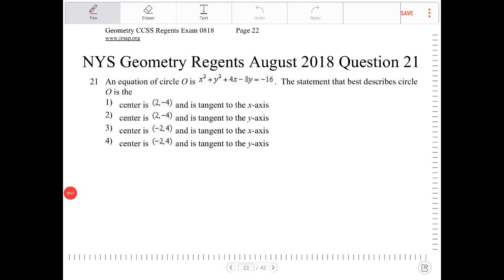An equation of circle O is x squared plus y squared plus 4x minus 8y equal to negative 16. The statement that best describes circle O is...